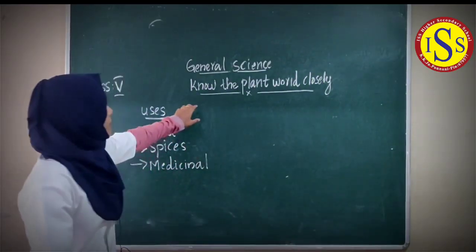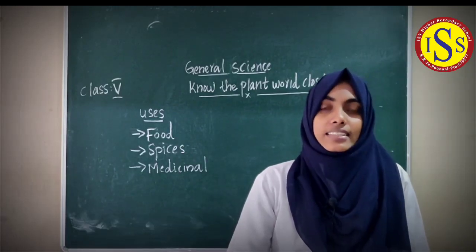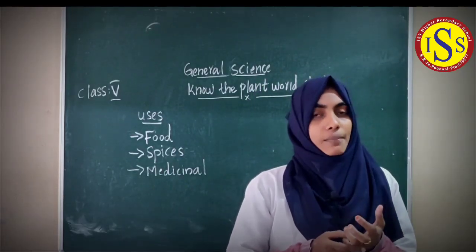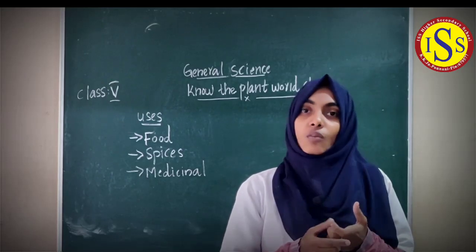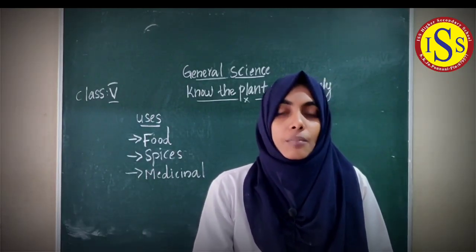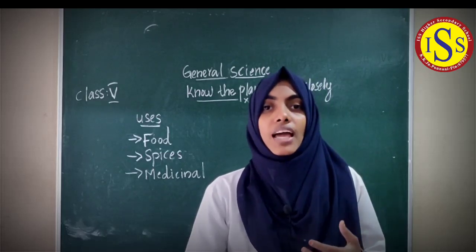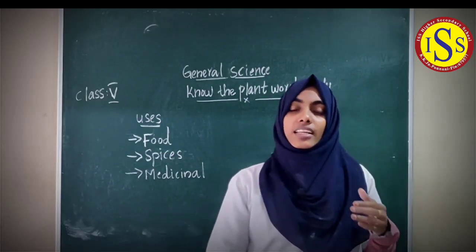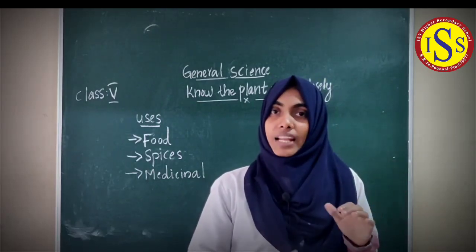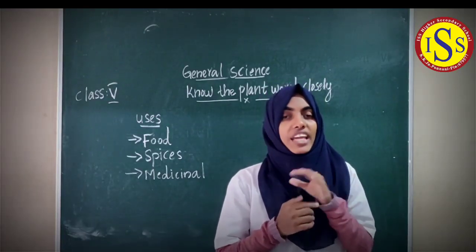Now we have to go through our first chapter. Chapter 9: 'Know the Plant World Closely.' Do you like plants and trees? Okay. What are the main parts of a plant? Root, stem, leaf, flower, and seed — these are the main parts of the plant.